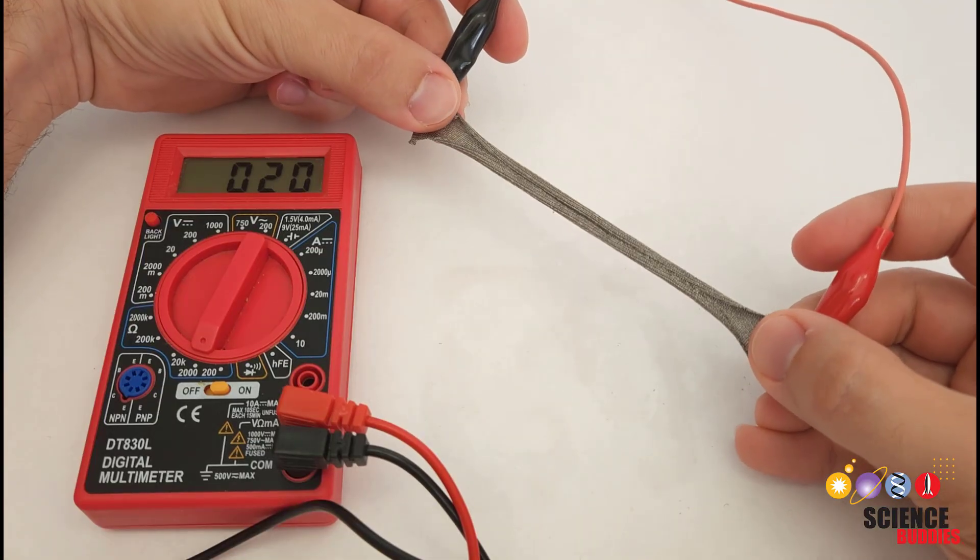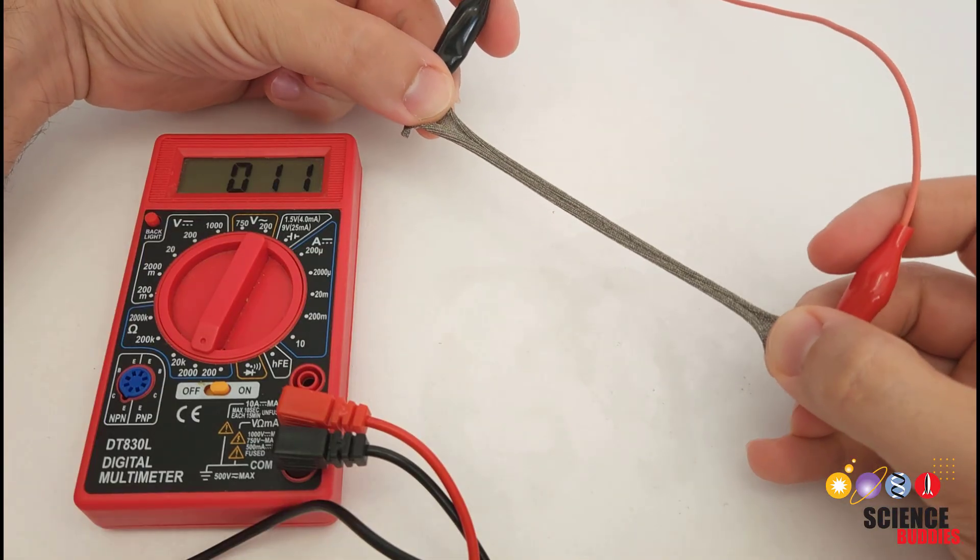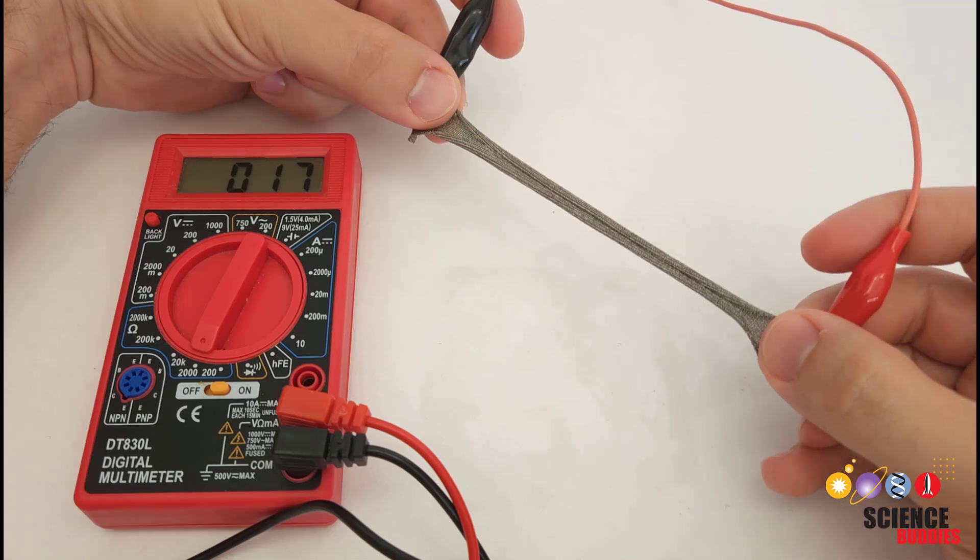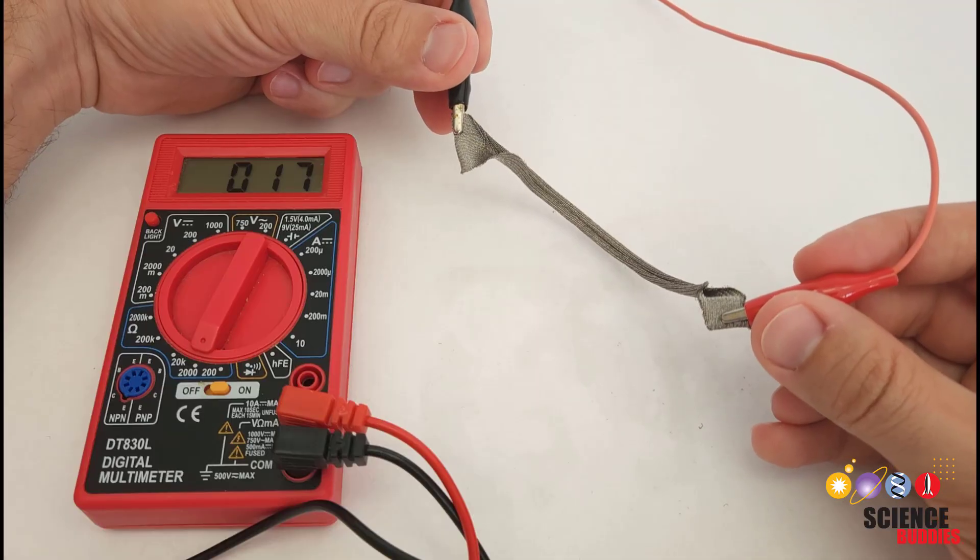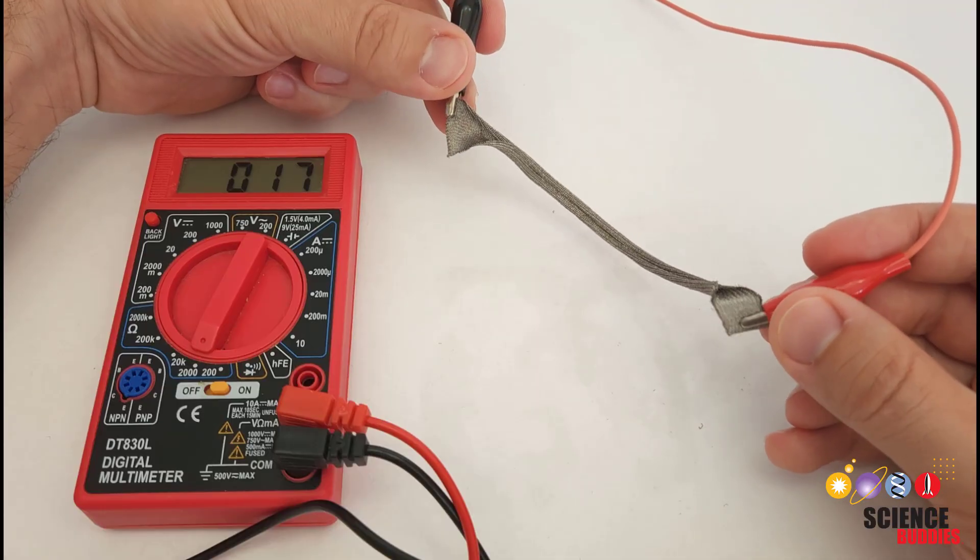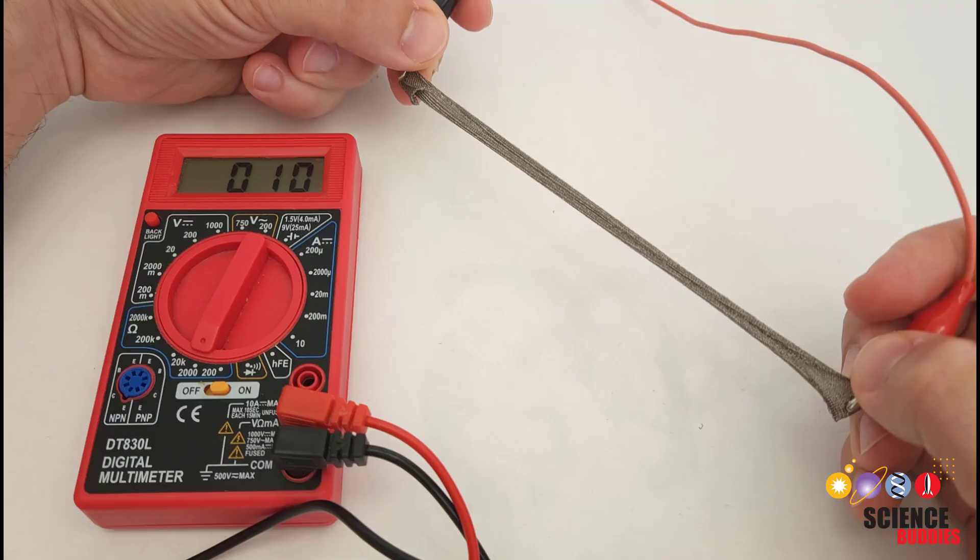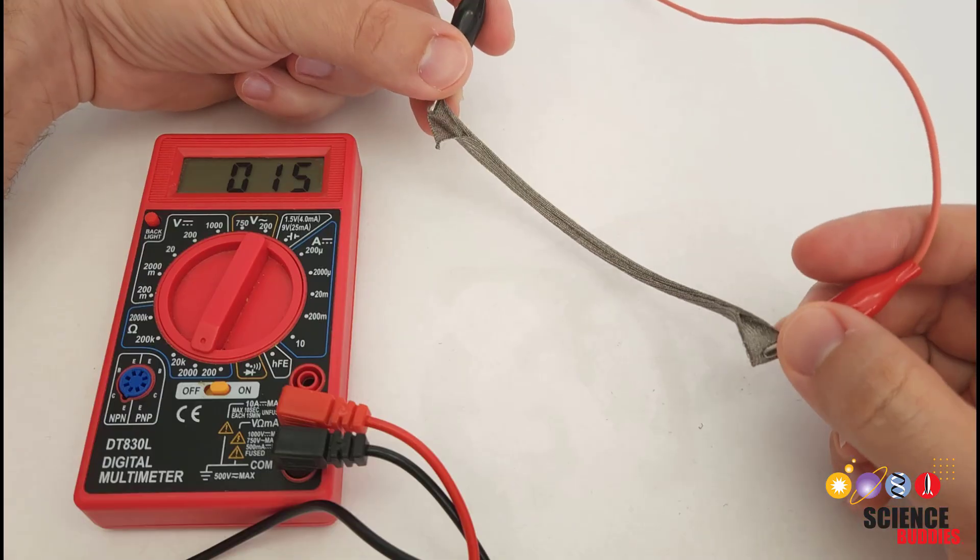Here's a piece of the conductive fabric connected to a multimeter to measure its resistance. You can see that when I stretch it, its resistance goes down. This might seem counterintuitive if you've taken a physics class, because there you learned that if a material gets longer and skinnier, its resistance goes up because it's harder for electrons to flow through it.